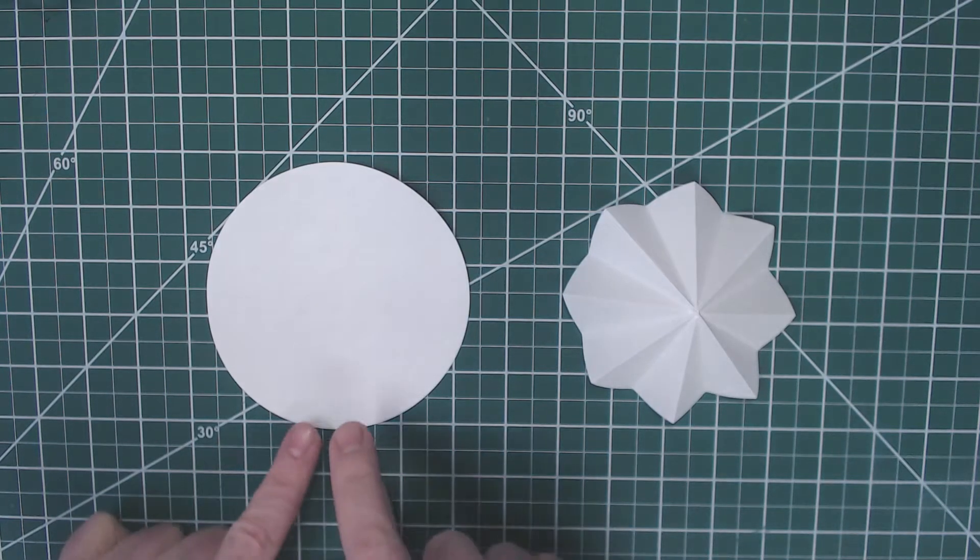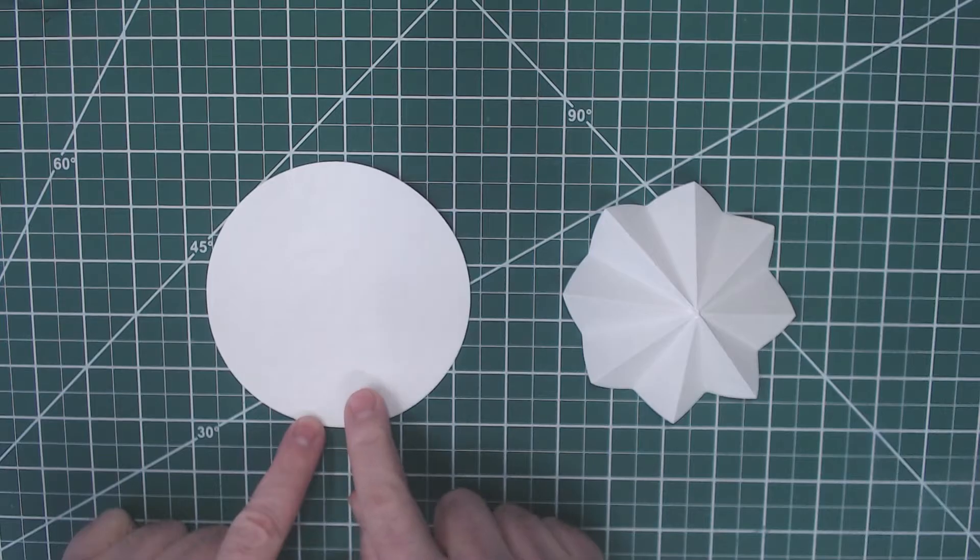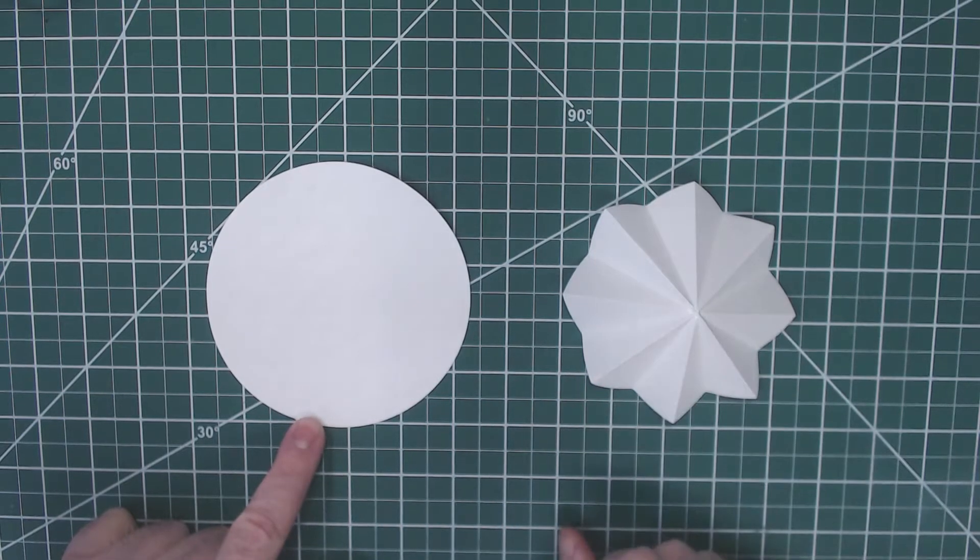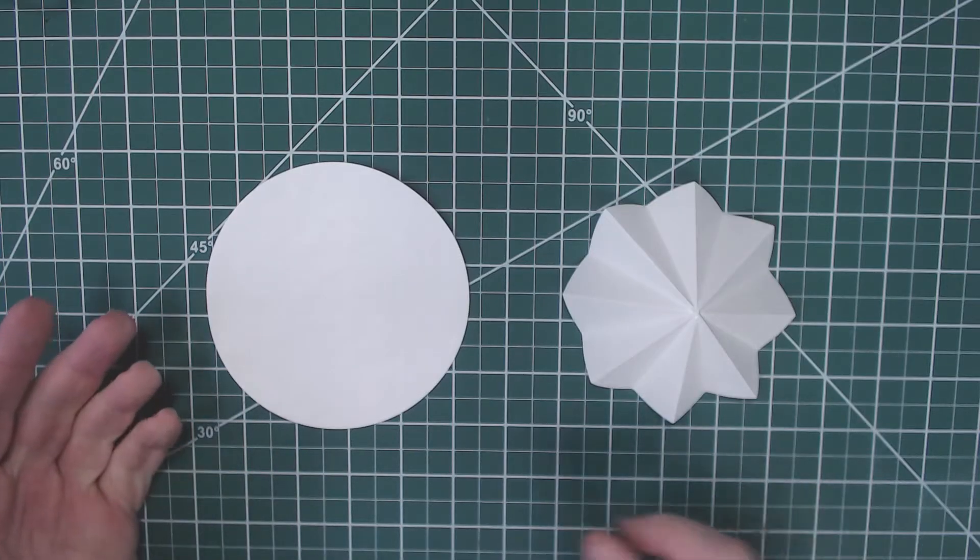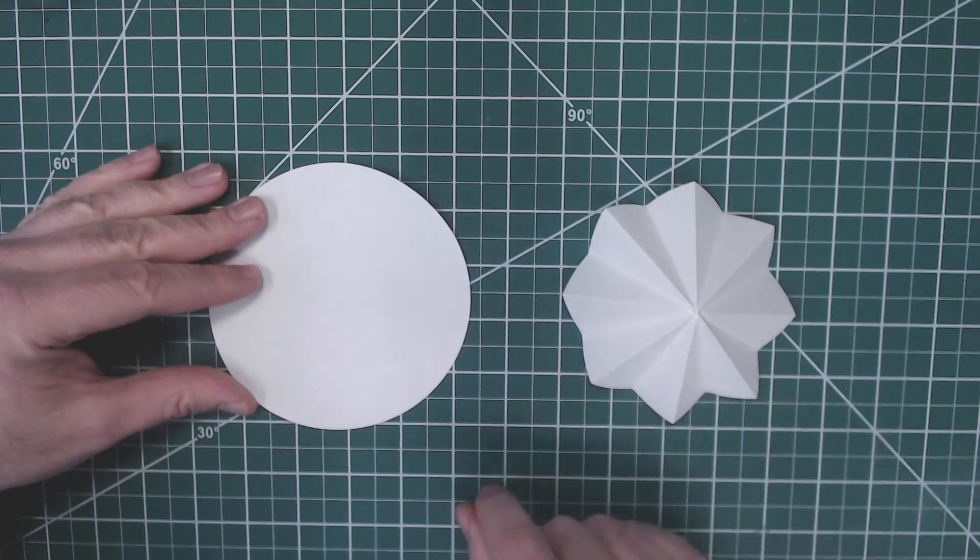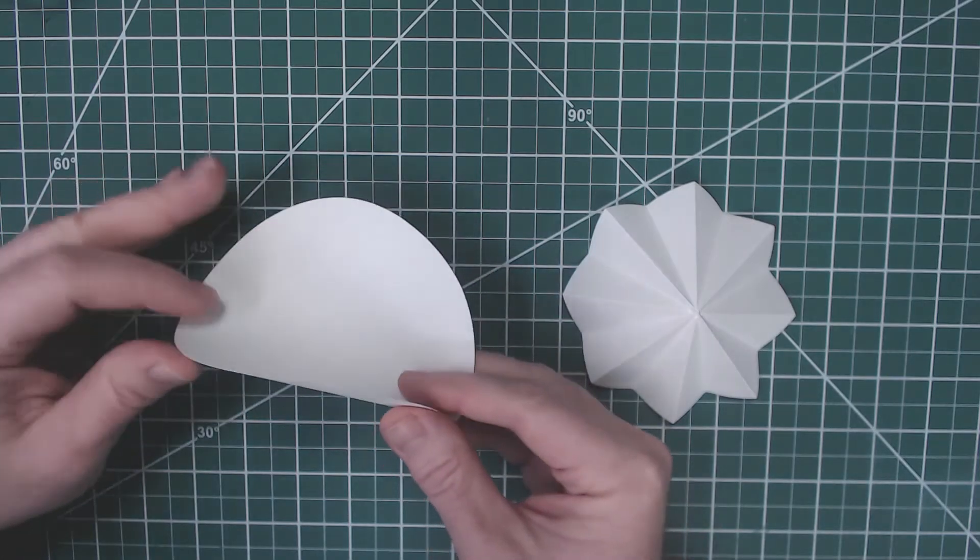Today I'm going to show you how to take a regular piece of flat filter paper and turn it into fluted filter paper. Now you can buy fluted filter paper, but why would you? If you have the flat filter paper, you can fold it like this in just a minute.